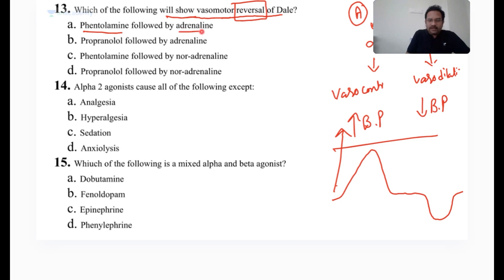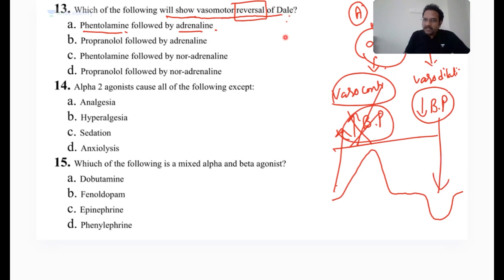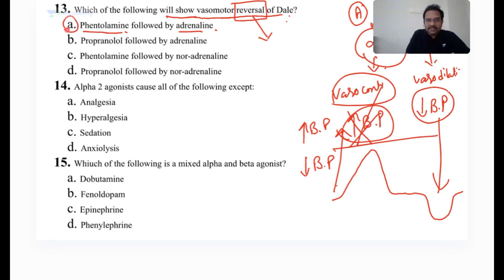Phentolamine followed by adrenaline. Phentolamine blocks alpha receptors. If phentolamine is blocking alpha receptors, vasoconstriction will not occur and rise in BP will not be there. When you give adrenaline, these receptors are blocked, so this response will not be there. But beta-2 receptors will remain, so a fall in BP will occur. In the Dale phenomenon, initially BP increases — but here, decreased BP is seen. This phenomenon is called reversal of BP, caused by the combination of phentolamine followed by adrenaline.